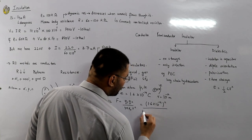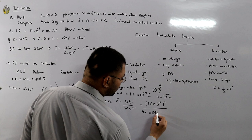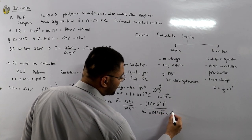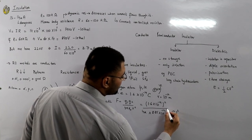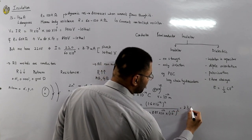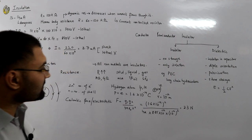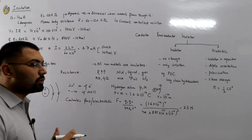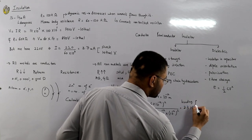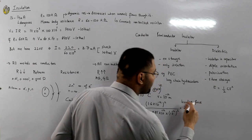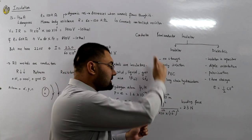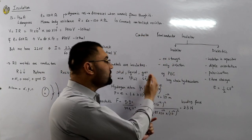Putting these values into the formula: F = (1.6 × 10⁻¹⁹)² / (4π × 8.85 × 10⁻¹² × (10⁻¹²)²). Working through the calculation, this comes out to approximately 2.3 to 2.6 newtons. This force is called the binding force — it is the force keeping the electron bound to its parent atom.